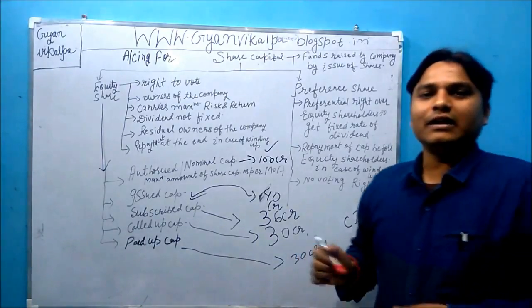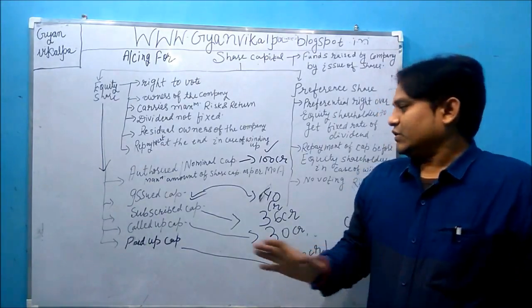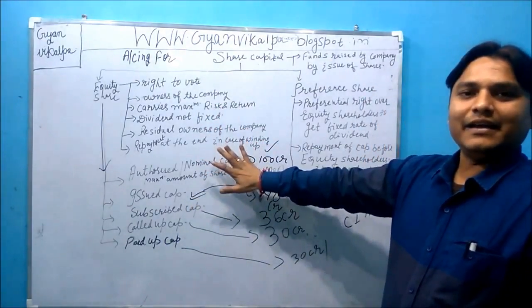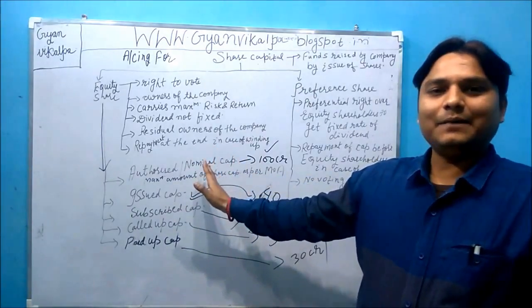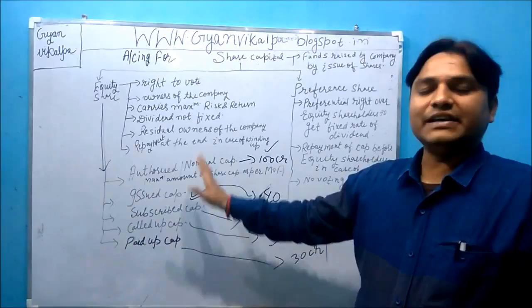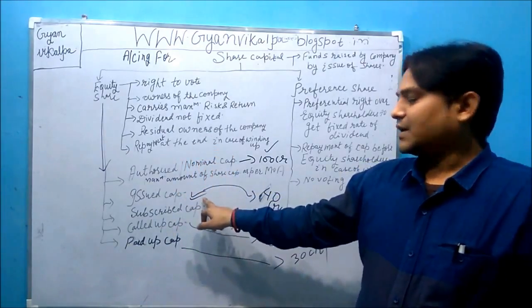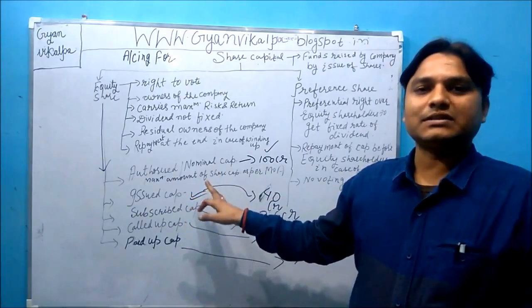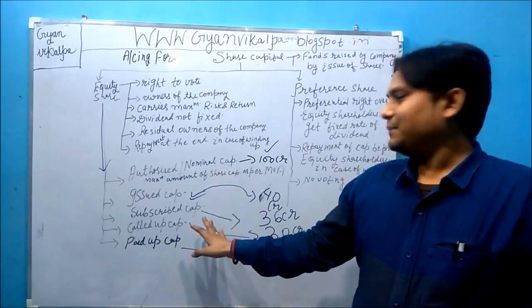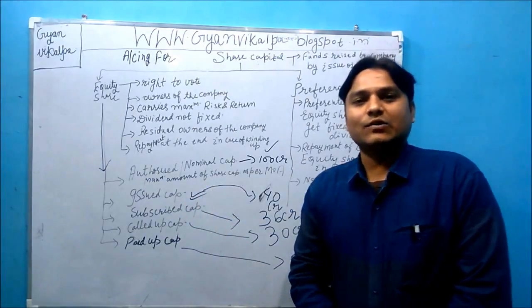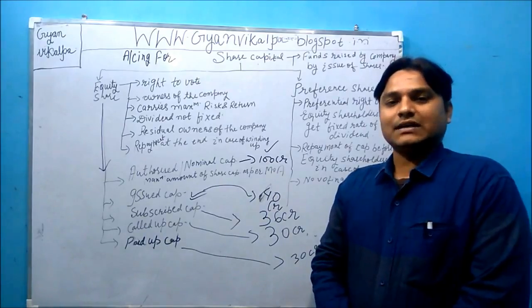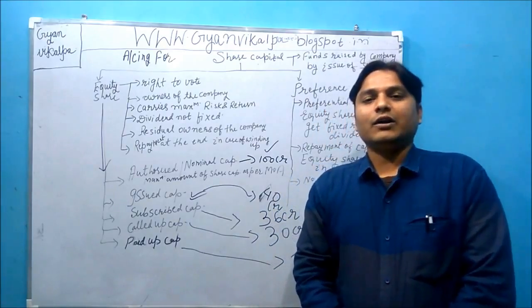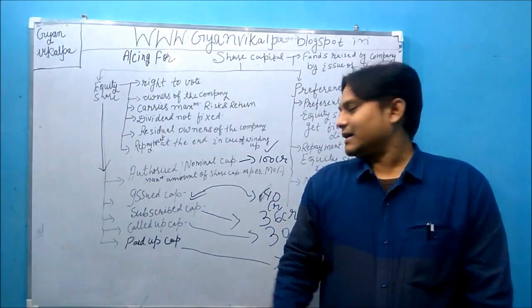Let me revise this once more. Authorized capital: the maximum amount a company can issue in the form of shares. Issued capital: that part of authorized capital which the company has issued to the general public for raising funds. Subscribed capital: that part of issued capital subscribed by the public for investment. Called up capital: that part of subscribed capital which the company has called upon investors to pay. Paid up capital: that amount of called up capital which has actually been paid by the allottees or shareholders.